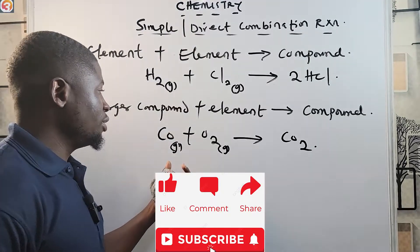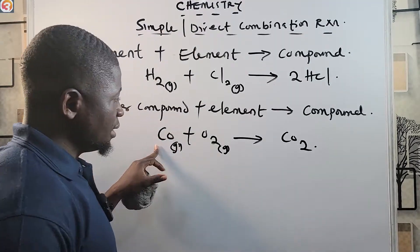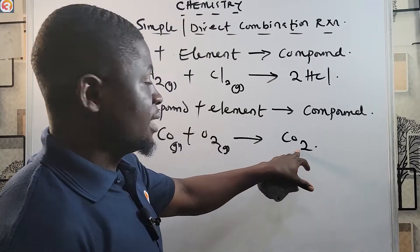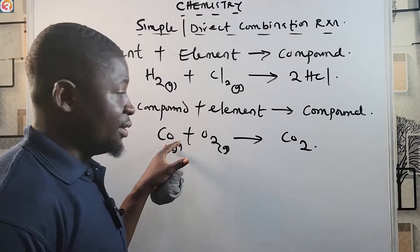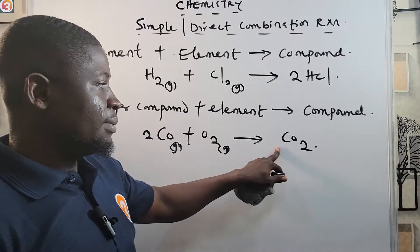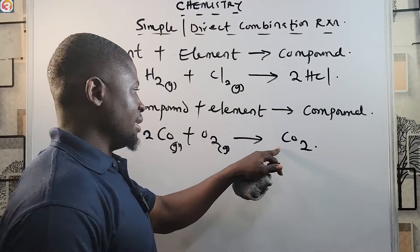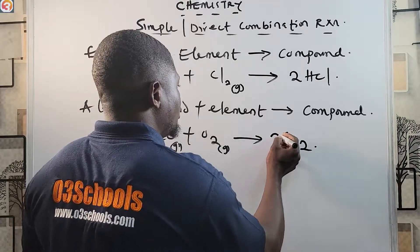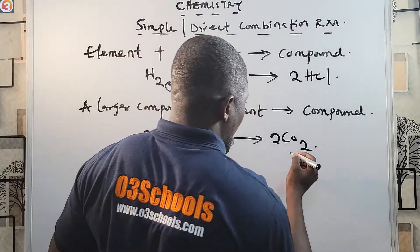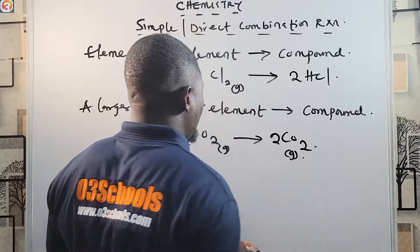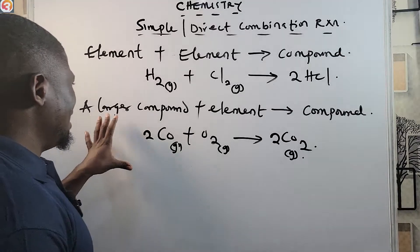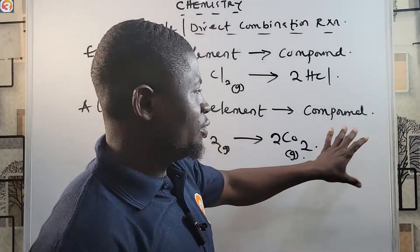Let's check if the reaction CO + O₂ → CO₂ is balanced. We have one C on the left and one on the right — balanced. But we have two O on the left from O₂ plus one from CO, totaling three oxygens, versus two in CO₂ — not balanced. So we balance it as: 2CO + O₂ → 2CO₂. This is the combination reaction between a compound and an element giving a compound.